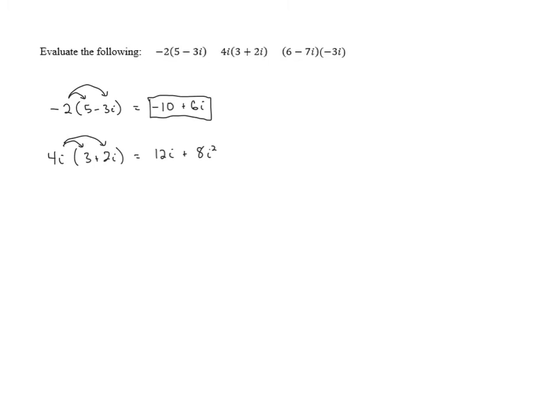However, we can't leave our answer like this. Remember that i squared is equal to negative 1, so 8i squared is equal to 8 times negative 1, or negative 8. So we can rewrite this as 12i minus 8, and it looks a little bit nicer if we put the real part first. So we're going to rearrange these terms and write it negative 8 plus 12i. That is our final answer.